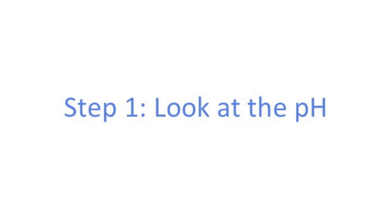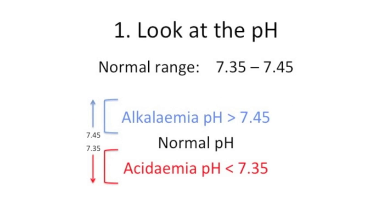Once you've understood those fundamental basics, let's move on to the three easy steps, starting with Step 1: look at the pH. The normal range for pH in the blood is 7.35 to 7.45. Anything above 7.45 is alkalemia and anything below 7.35 is acidemia. Remember, the -emia suffix tells you the state of the blood, and the -osis suffix tells you the process that is occurring. I've colour-coded this so you can quickly decide if something is alkalinising or acidifying.